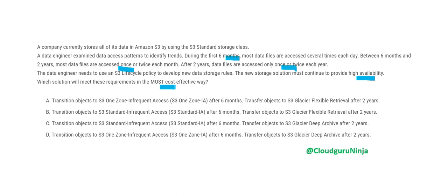Option A suggests transitioning to S3 One Zone-IA — Infrequent Access. However, One Zone-IA will never give you high availability. We want high availability, and One Zone-IA only stores data in one availability zone. If that availability zone crashes or has problems, your data is lost. That is not high availability. So we strike this out — anything to do with One Zone is wrong.